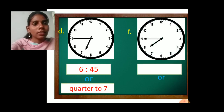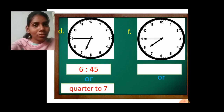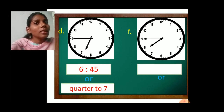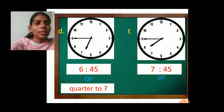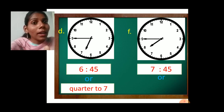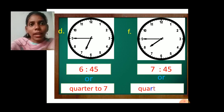Concentrate on the minute and hour hand. The minute hand is at number 9 — it means 45 minutes, quarter to. The hour hand has crossed number 7, so it is 7 hours 45 minutes. And in quarter to format, it is about to reach number 8, so it is quarter to 8. Write quarter to 8.